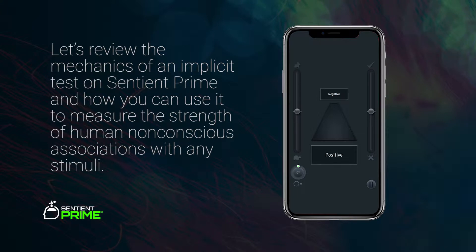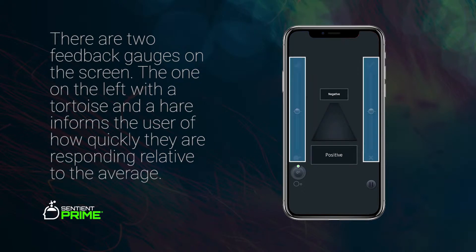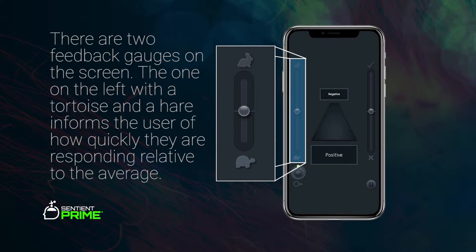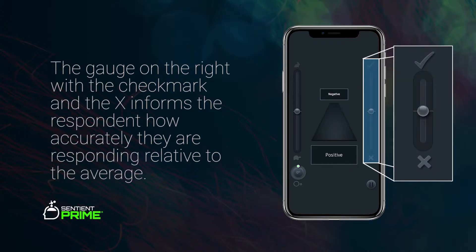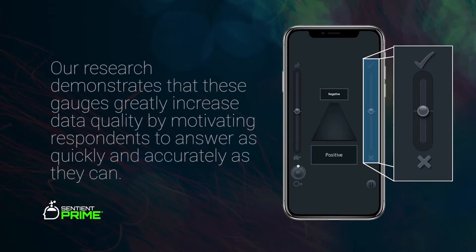To start, let's look at the interface which every survey participant will see. You can see there are two feedback gauges on the screen. The one on the left, with images of a tortoise and a hare, lets the user know how quickly they're responding relative to the average. The gauge on the right, with the check mark and the X, lets the respondent know how accurately they're responding relative to the average. Our research demonstrates that these gauges greatly increase data quality by motivating respondents to answer as quickly and accurately as they can.